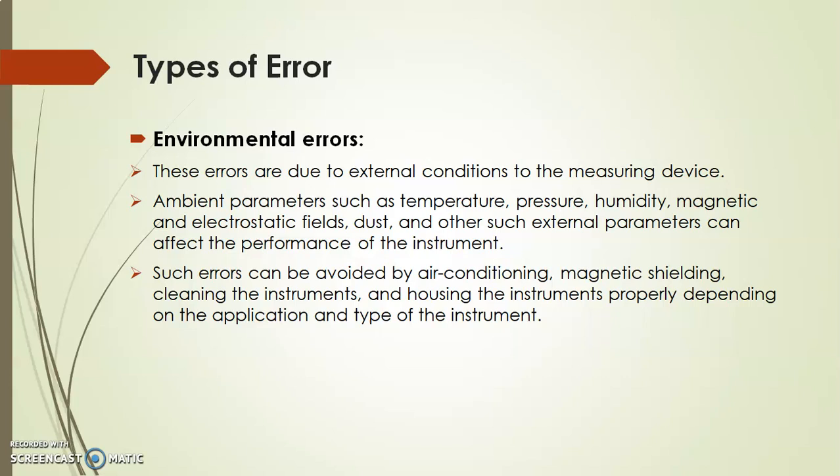The next systematic error is Environmental Error. These errors are due to external conditions affecting the measuring device. Ambient parameters such as temperature, pressure, humidity, magnetic and electrostatic fields, and dust can affect the performance of an instrument, causing environmental errors. Such errors can be avoided by air conditioning, magnetic shielding, cleaning the instrument, and housing it properly depending on the application and type of instrument.